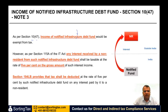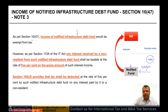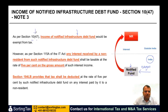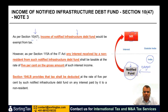As per Section 10(47), income of a notified infrastructure debt fund is exempt from tax. So if this notified fund in India earns some income and is notified under Section 10(47), then the income they earn is exempt. But once such a fund receives this income, it may also pay interest to contributors. If that contributor happens to be a non-resident, the question is at what rate would such interest be chargeable to tax?